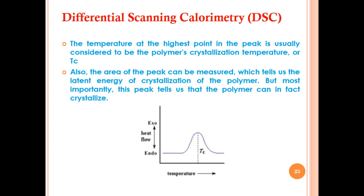From the curve, the x-axis is temperature and the y-axis is heat flow (exo and endo). The maxima represent Tc, the polymer crystallization temperature. The area of the peak can be measured, giving the latent energy of crystallization of the polymer. Most importantly, this peak tells us that the polymer can, in fact, crystallize. Latent heat is the heat absorbed or evolved during a constant-temperature process.